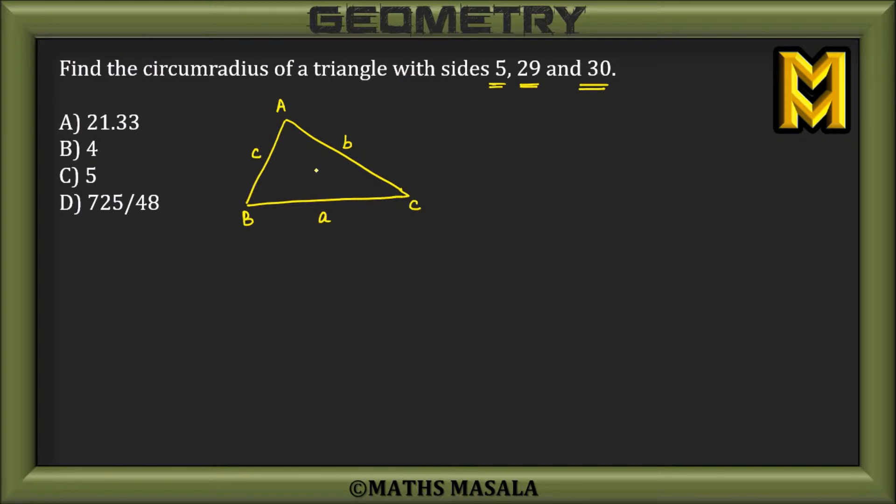to plot the perpendicular bisector of BC, this would be something like this, and the perpendicular bisector of AB, this would be something like this. Now they would meet each other at the circumcenter,